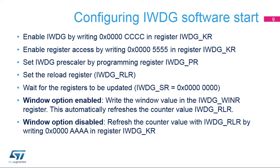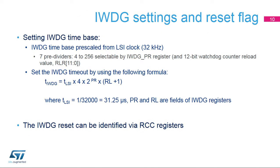Two options are now available: enable or disable the IWDG window option. To enable the window option, write the window value in the IWDG_WINR register. Otherwise, refresh the counter by writing 0x0000AAAA in the key register to disable the window option. The IWDG time base is pre-scaled from the LSI clock at 32 kHz. The IWDG_PR prescaler register can divide the LSI clock frequency by 4 up to 256. The watchdog counter reload value is a 12-bit value written in the IWDG_RLR register. A formula can be used to determine the independent watchdog timeout, based on the LSI period, its pre-scaler, and the selected watchdog counter reload value.